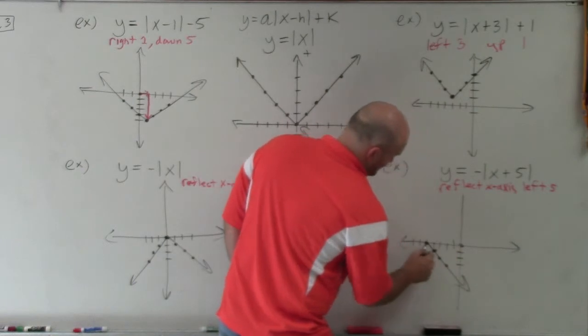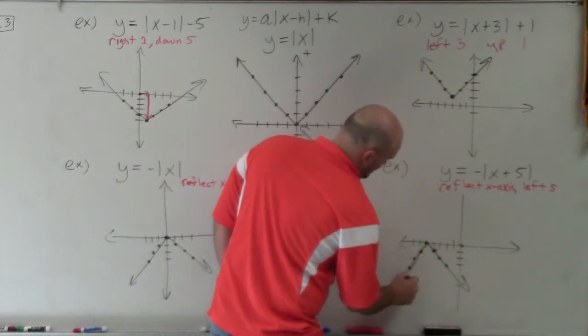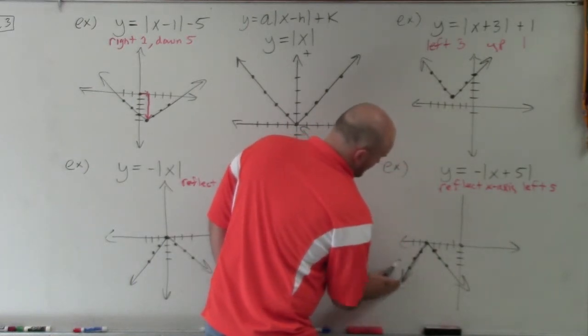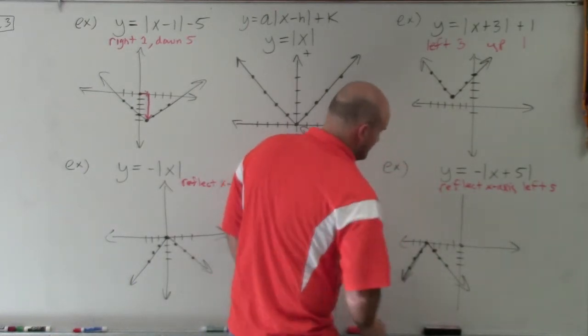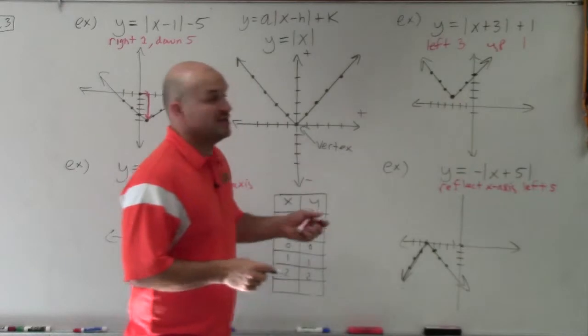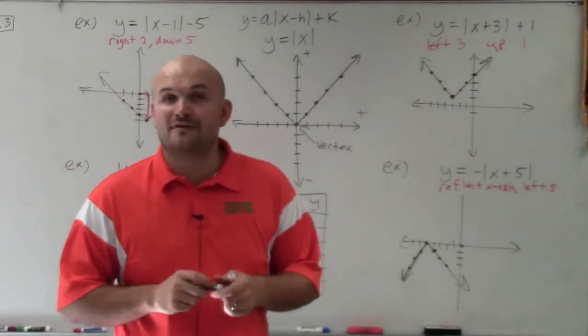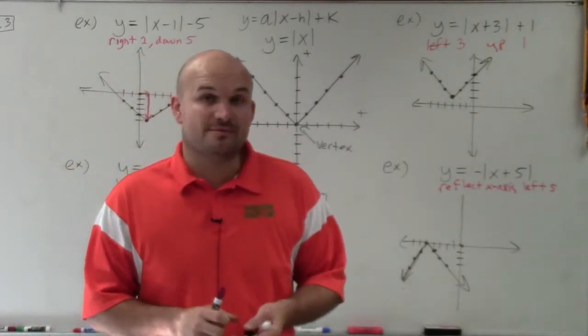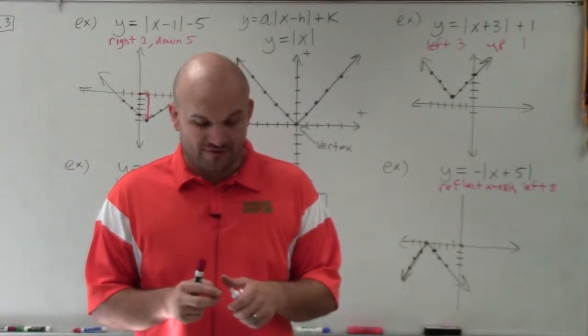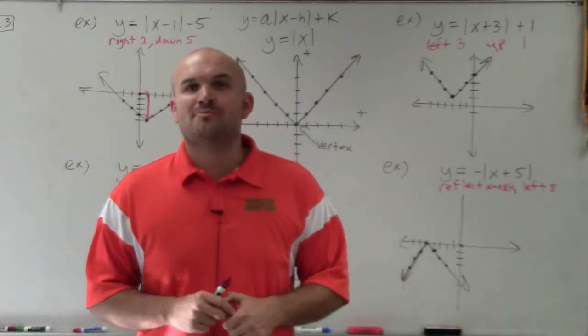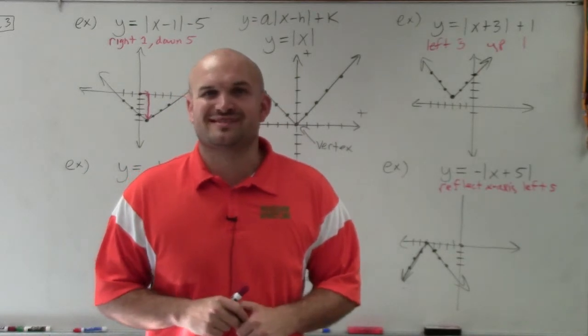My graph's not the best, but there you go. That is how you graph using transformations of an absolute value function with multiple transformations. Thanks.